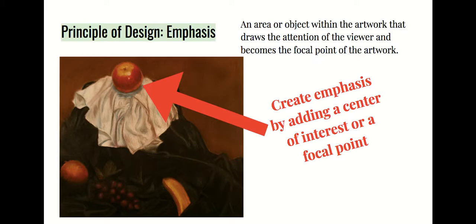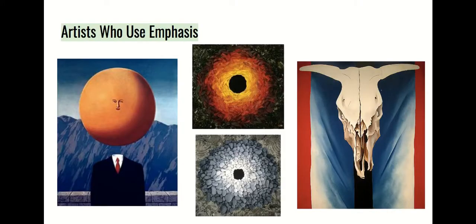When creating your still life, think about what object you can put emphasis on so that the viewer looks at that part first. Some artists who use emphasis include Magritte, who created abstract surrealist paintings; Andy Goldsworthy, who created emphasis with his land art drawing the eye to the center; and Georgia O'Keeffe, who used emphasis so your eye moves from the center around the entire piece.